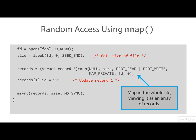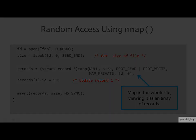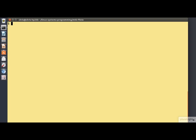So that's quite an elegant way of getting random access into a file. I'm going to revisit our file copy program one last time using mmap.